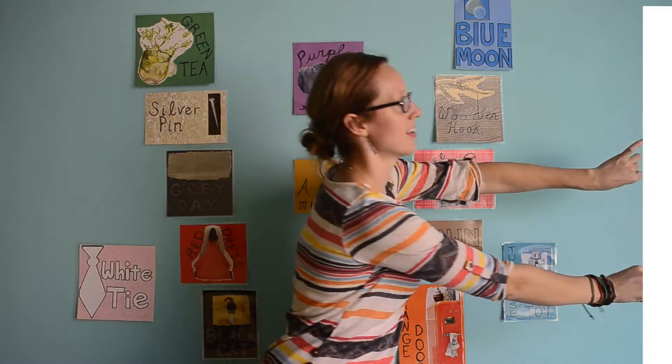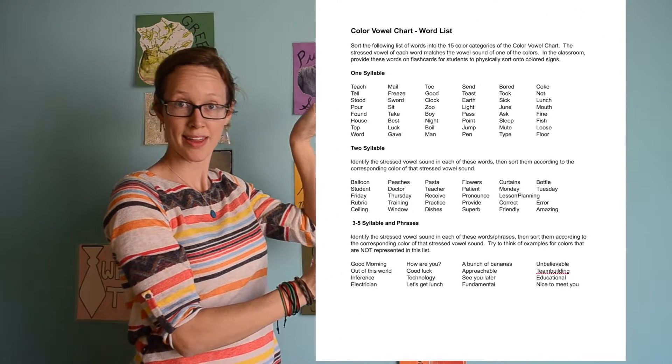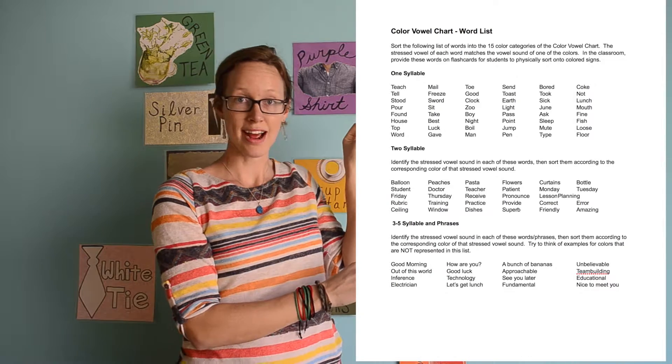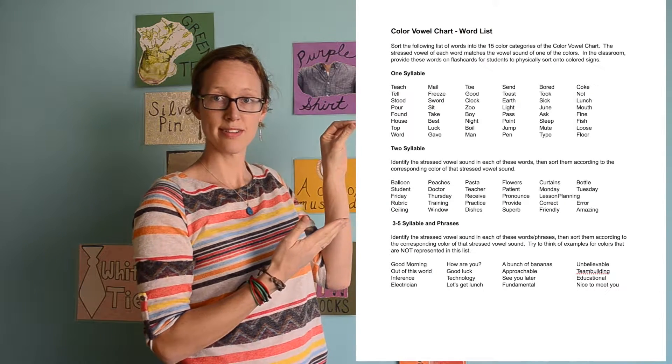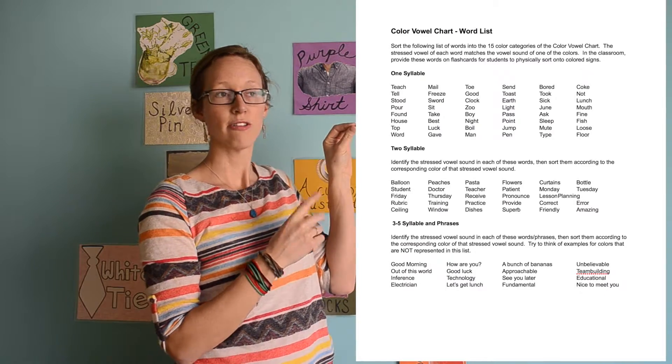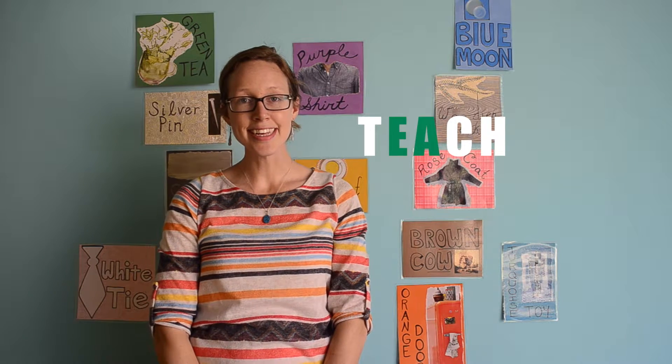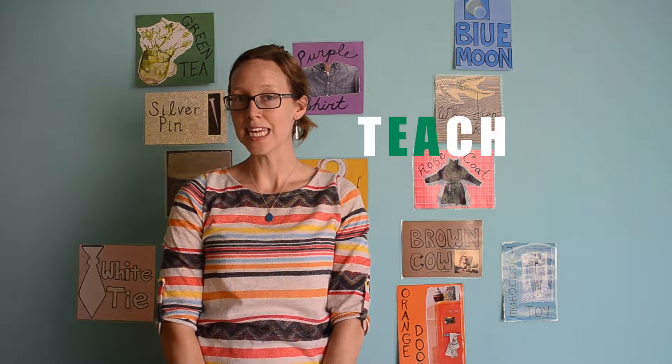Let's see how much you know already. Find the color vowel chart and your word list — both are in Padlet. Your task is to look at the one syllable words and identify the color for each word. For example, 'teach' says ee. What color makes the ee sound? Green. Green tea. Now pause the video, look at the one syllable words, and identify the color that matches the vowel sound.